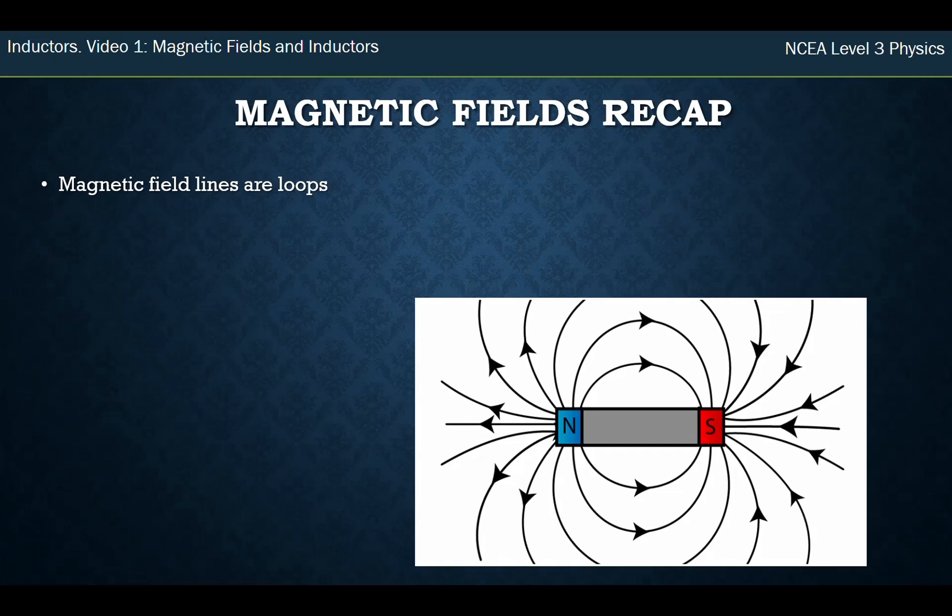So in Level 2, we saw that, for example, a bar magnet has magnetic field lines, and these travel in loops, so they have to make sure that they loop right around. They go from north to south.